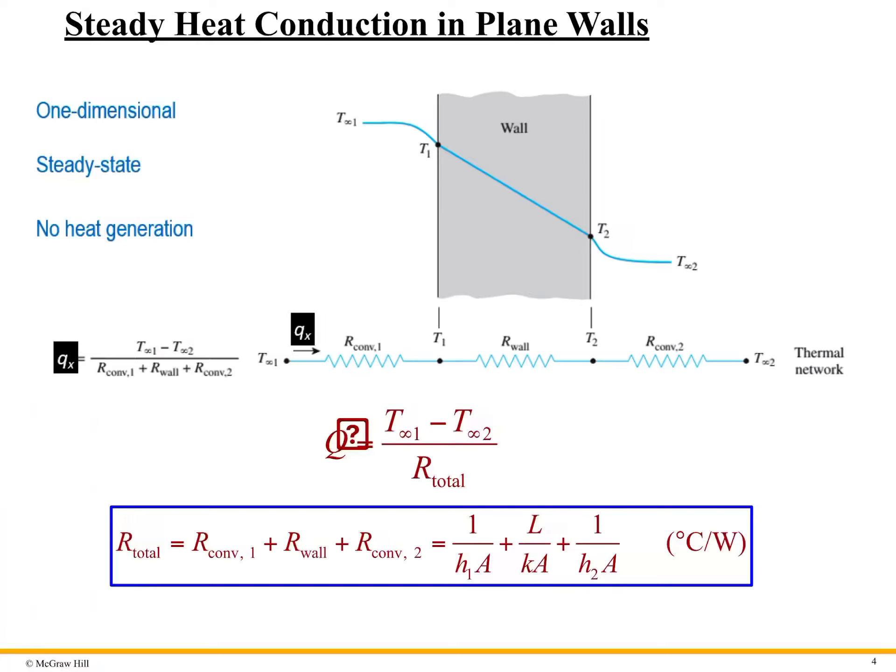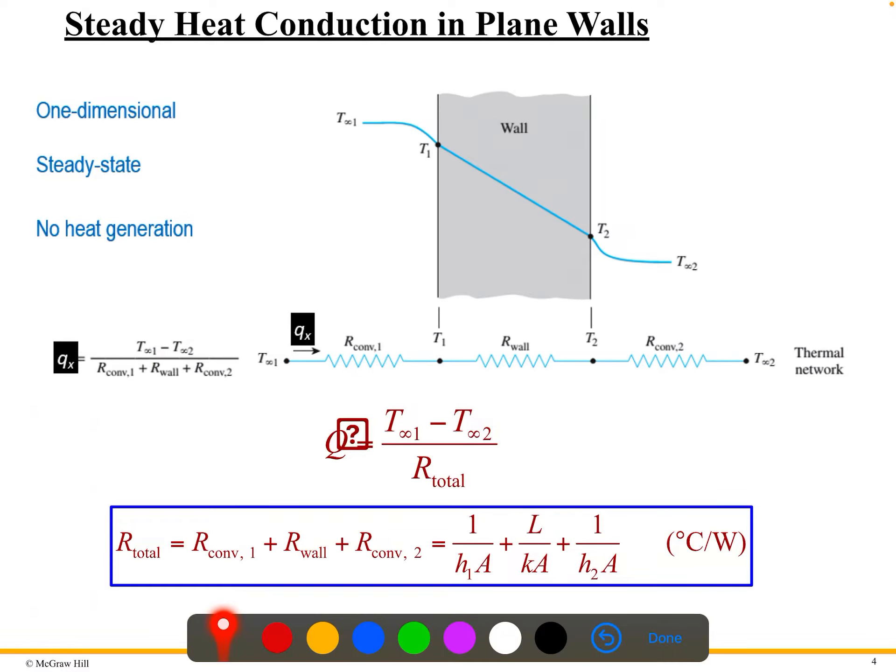Now here is the problem. We have a wall. Here this is the atmospheric air, and here this is the atmospheric air. For this, the temperature is T infinity 1, and it is T infinity 2.